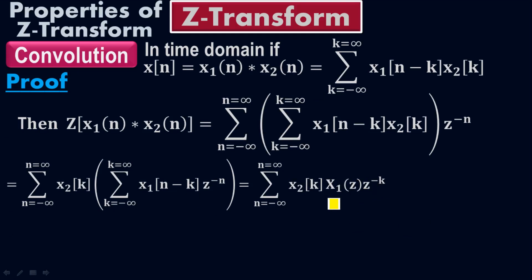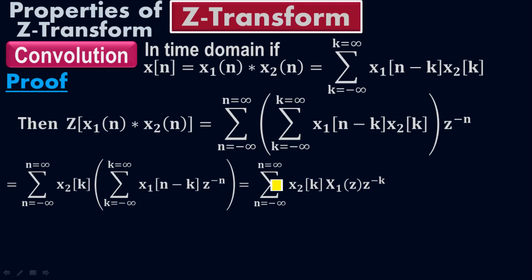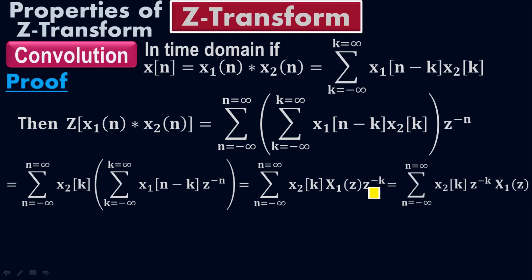Using the time-shifting property, the Z-transform of X1(N minus K) times Z to the negative N equals X1(Z) times Z to the negative K. So for the whole expression inside the parenthesis, I put X1(Z) times Z to the negative K, and keep the summation of X2(K) as is. This gives: summation of X2(K) times Z to the negative K times X1(Z).